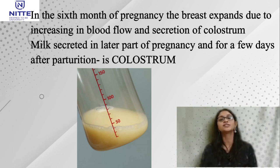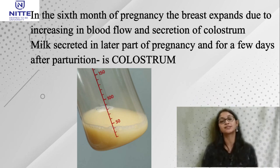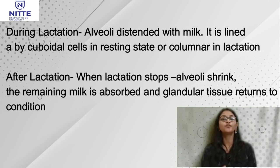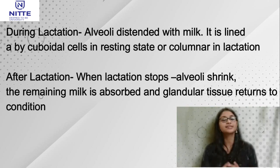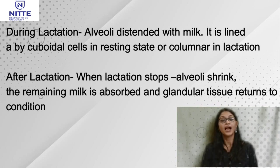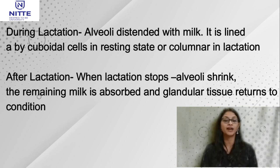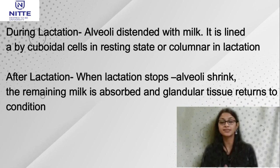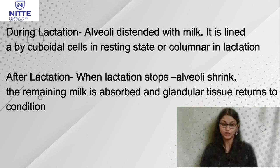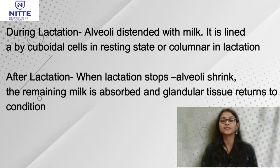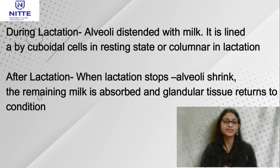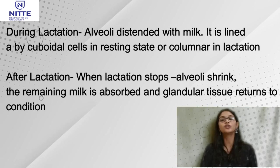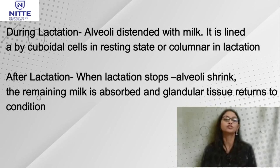True milk secretion starts a few days after parturition. During lactation the alveoli are distended with milk, and the alveoli are lined by cuboidal cells in the resting state or columnar cells during lactation. After lactation stops, the alveoli shrink in size, the remaining milk is absorbed, and the glandular tissue returns to the resting condition.